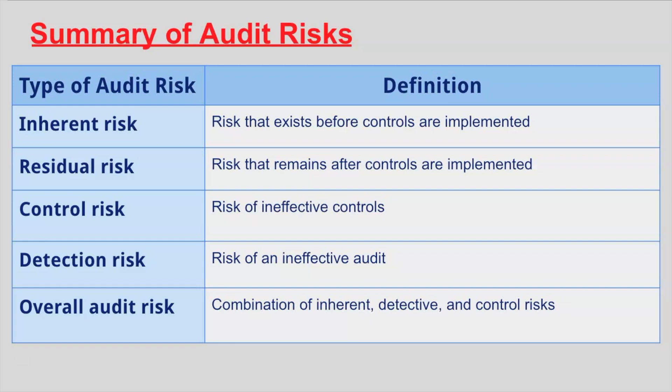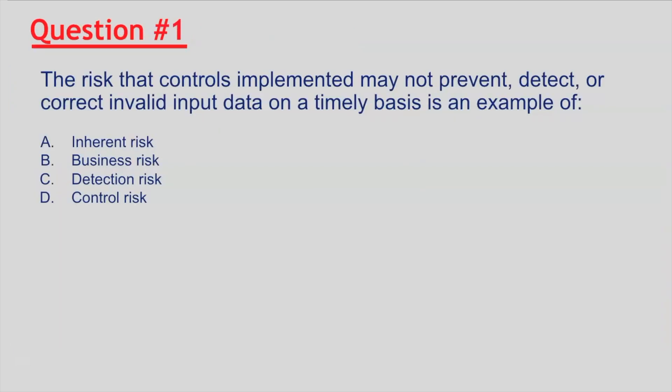Here is a summary of the audit risks we discussed — keep this handy moving forward. Question number one: the risk that controls implemented may not prevent, detect, or correct invalid input data on a timely basis is an example of — D, control risk, is the correct answer, because the risk in the question pertains to ineffective controls.